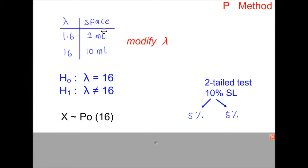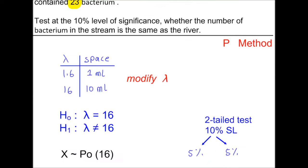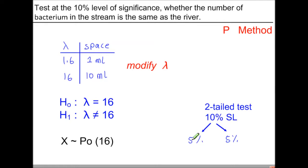Now the probabilities method starts off the same. We modify the value of lambda, H0, H1. Here's our Poisson table that we're going to use. We split the significance level because we're doing a two-tail test. 23 was our test value. Because we're doing the two-tail test, we work out two probabilities. The probability that x is less than or equal to 23, and separately we work out the probability that x is more than or equal to 23. And then we compare those probabilities with 5%.